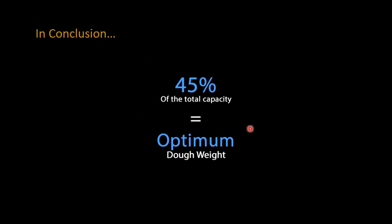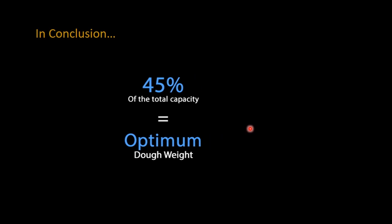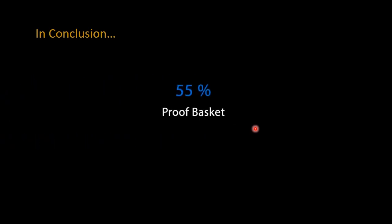Now if you're using a proof basket I would recommend going to 55 percent and the reason is that you really want to have, you don't want to have too big of a basket, especially if you're making the round styled loaves. You want to keep them a little bit more compact.